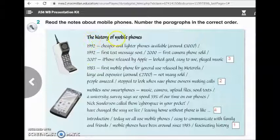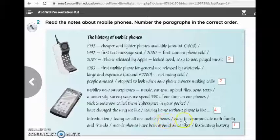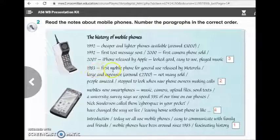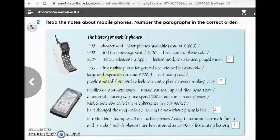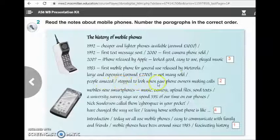So here we have the heading, the history of mobile phones. And the first paragraph, here we have it, number 1. Introduction. Today we all use mobile phones. Easy to communicate with family and friends. Mobile phones have been around since 1983. Fascinating history. And here we have number 2. Paragraph number 2.